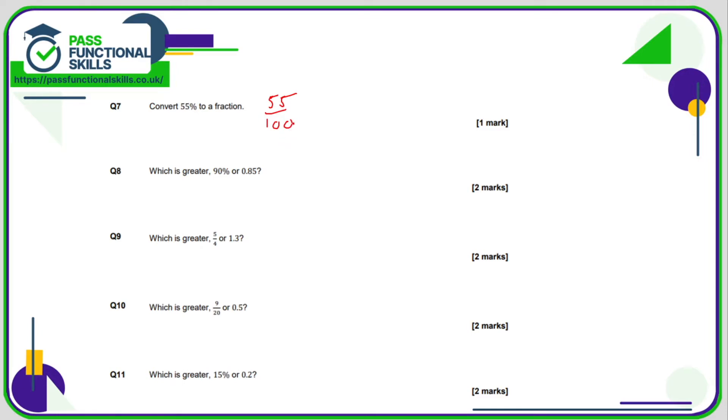Seven to 11, we're back to non-calculator. So 55% to a fraction. Remember that percent means out of 100, so 55% means 55 out of 100. There it is as a fraction, but this fraction can be simplified.